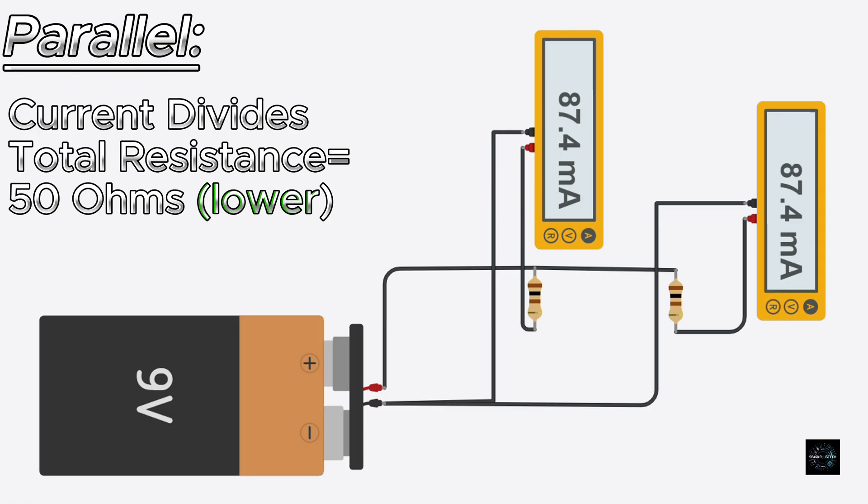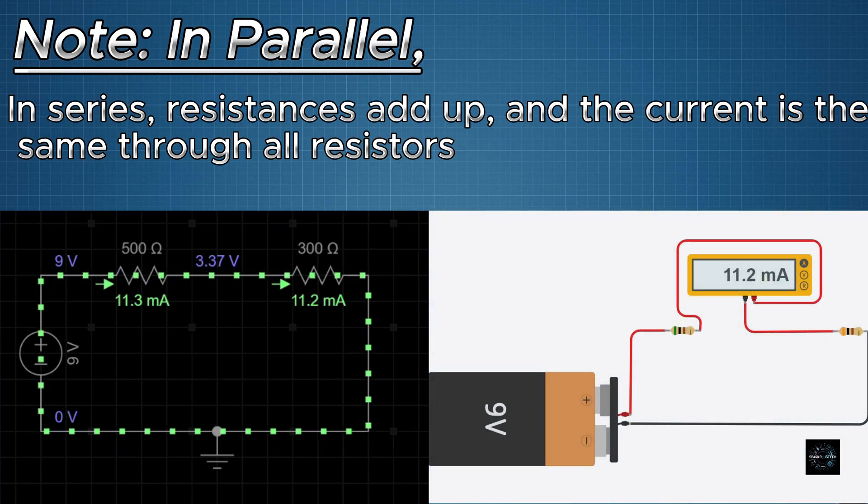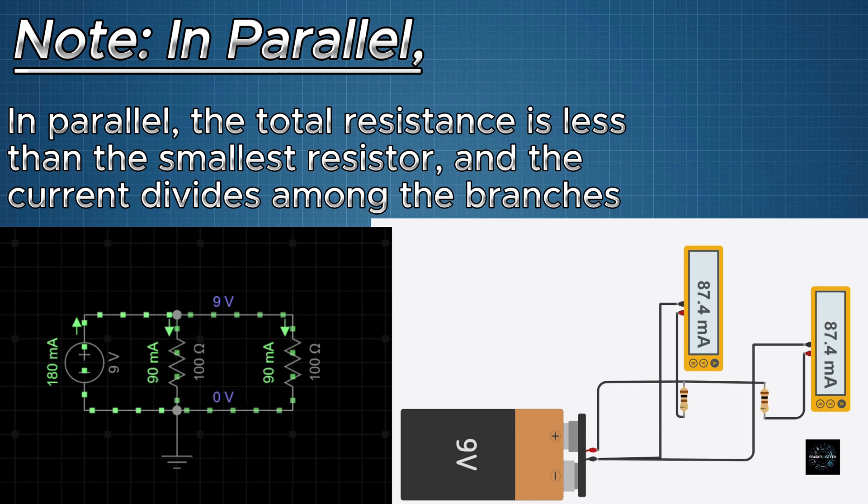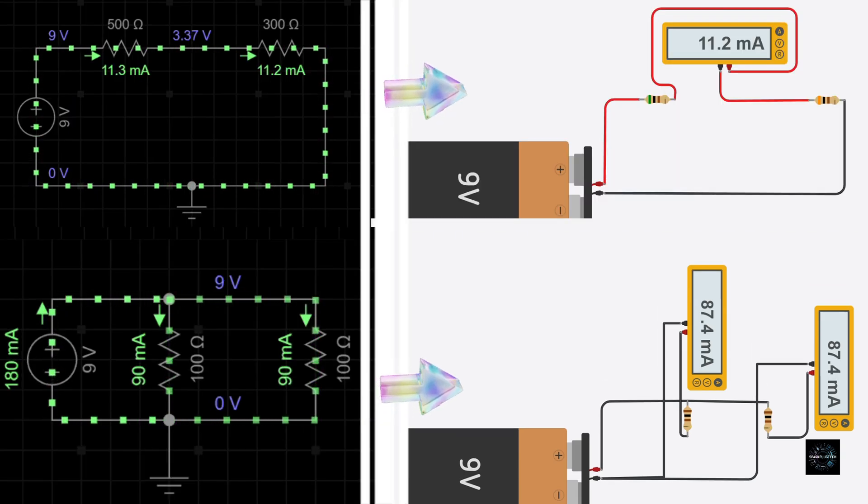So, here's what you need to remember. In series, resistances add up and the current is the same through all resistors. In parallel, the total resistance is less than the smallest resistor and the current divides among the branches. These configurations are everywhere in real life, from string lights to home wiring systems.